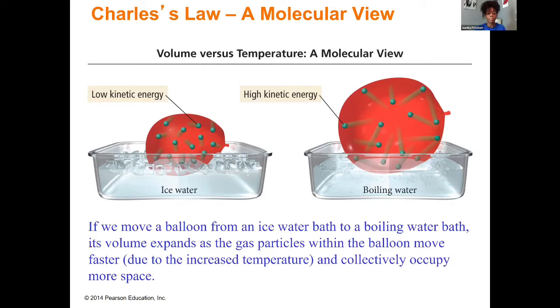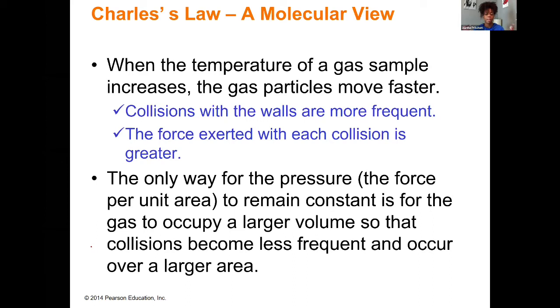And so simply put, as these gases are heated, getting more temperature added to them, the gas particles start moving even faster. There's going to be a greater number of collisions that are occurring, and that's going to cause that expansion of this volume container. The only way for the pressure to remain constant is for the gas to occupy larger volumes so that the collisions become less frequent and occur over a larger area. In these Charles law problems, we're assuming that our pressure is being held constant.